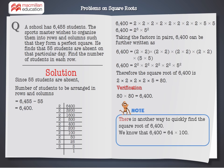Note: there is another way to quickly find the square root of 6,400. We know that 6,400 is equal to 64 into 100, which gives us the square root as 8 into 10, which is equal to 80.